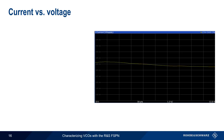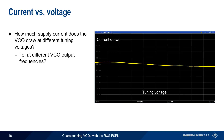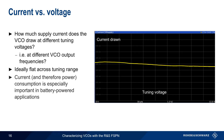The current versus voltage measurement answers the question: how much supply current does the VCO draw at different tuning voltages? Since output frequency is almost entirely a function of tuning voltage, this plot also approximates current consumption as a function of VCO frequency. Ideally, the current consumption should be flat across the tuned voltage range. For a given supply voltage, higher current means higher power consumption, making this measurement particularly useful when characterizing battery-powered VCOs.